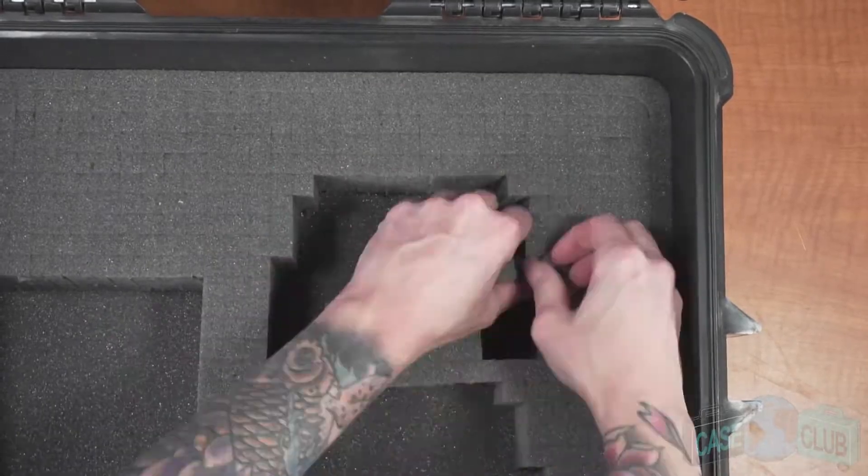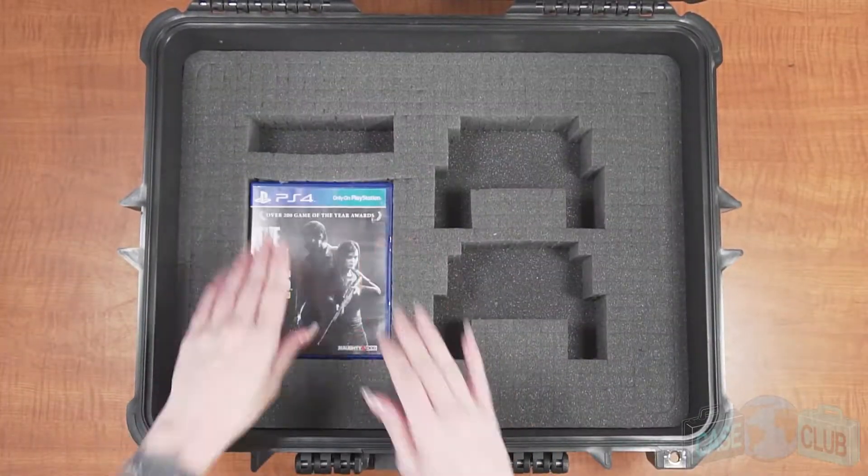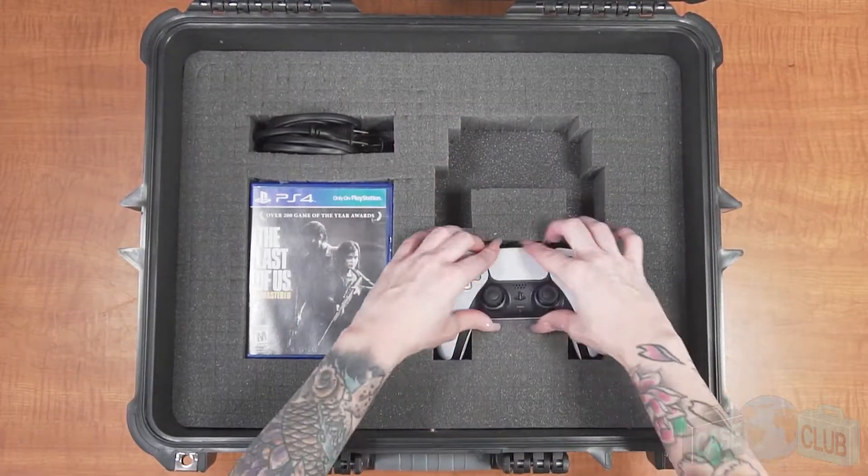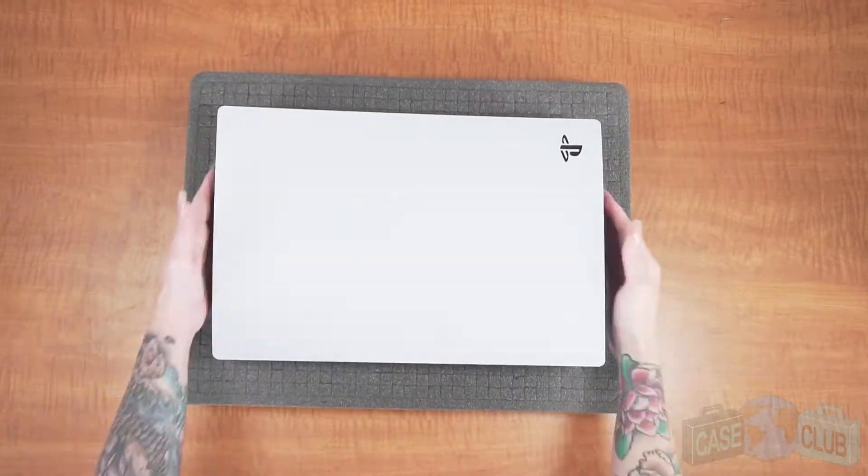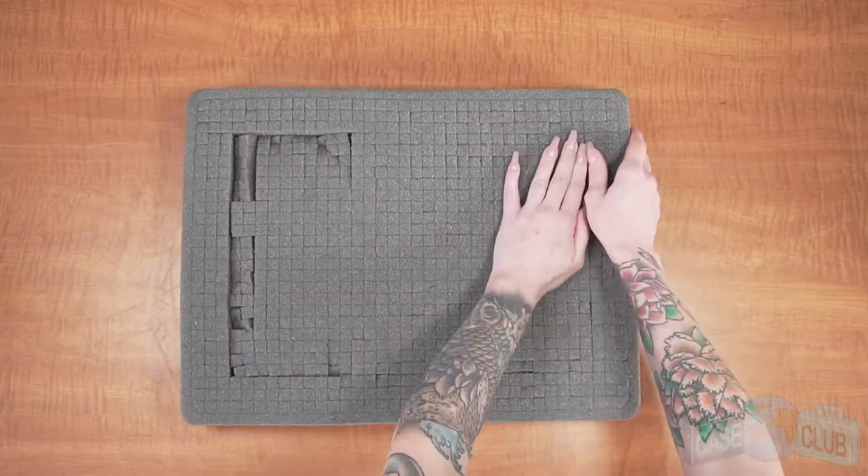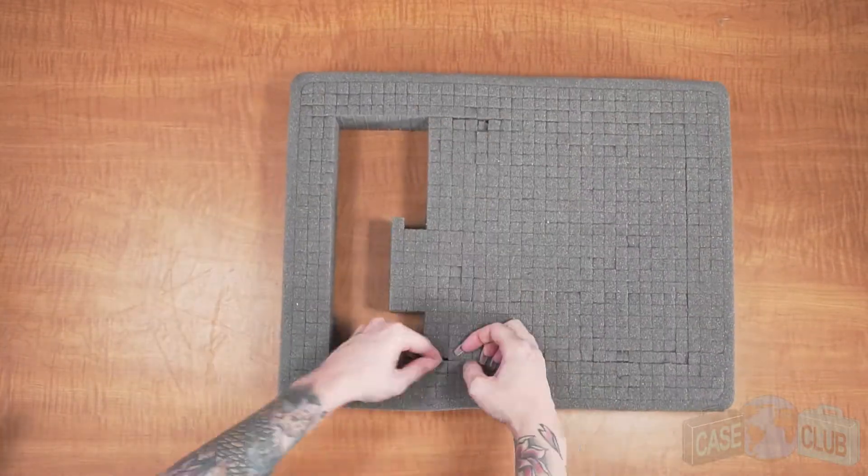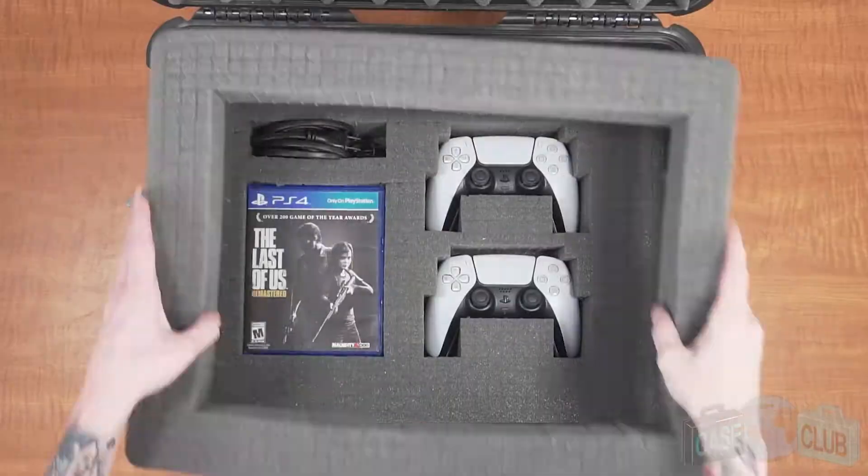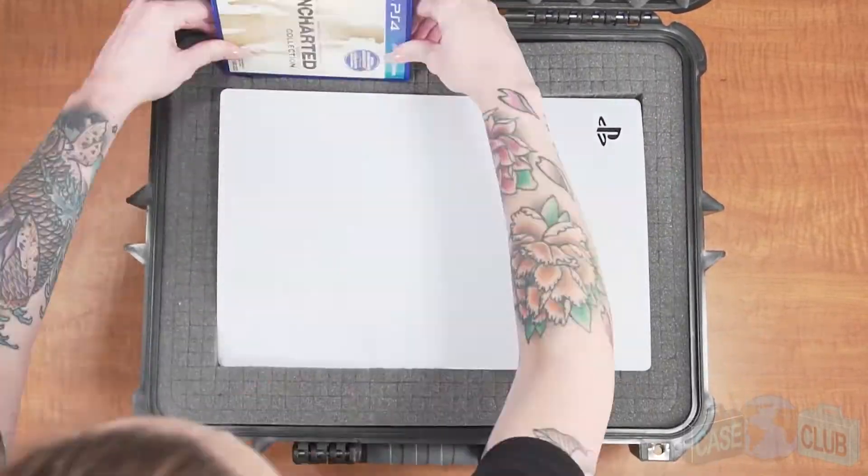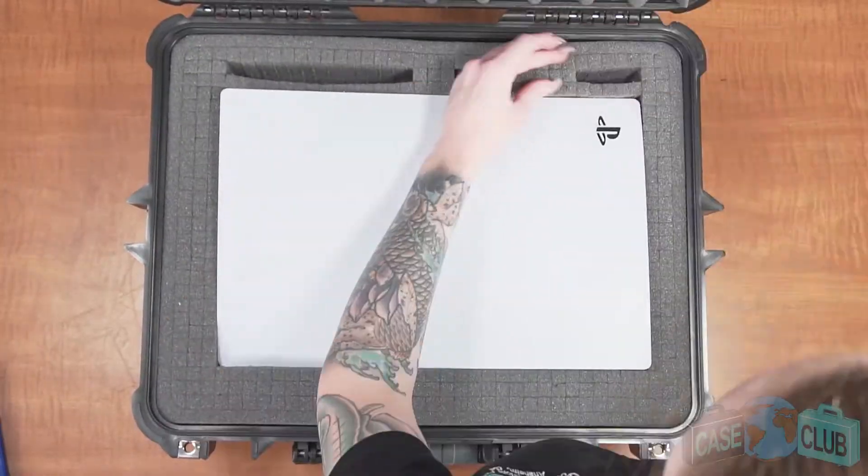Repeat this with the controllers and add an accessory pocket for the cables. Once those basic shapes are done, repeat the process with the top layer of foam for the console and put the foam back in the case. With the extra space behind the console, we can add a couple more spots for games.